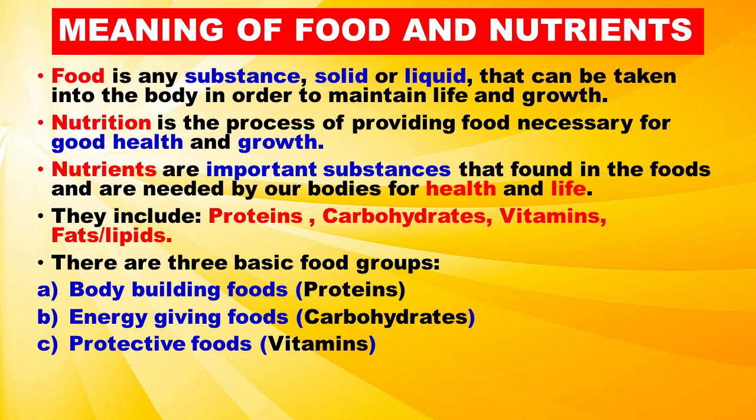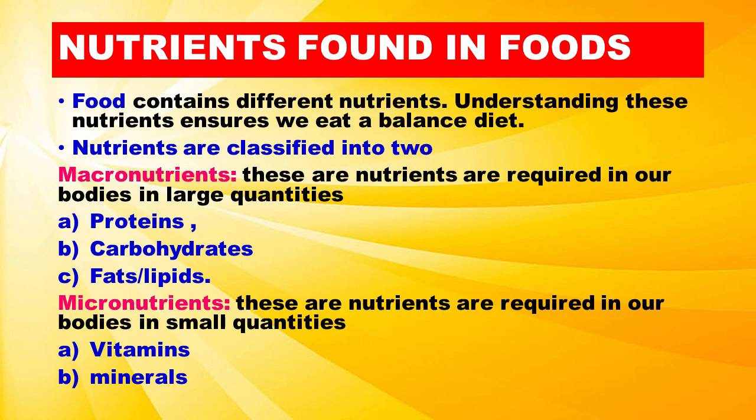Nutrients include proteins, carbohydrates, vitamins, and fats or lipids. There are three basic food groups: bodybuilding foods (proteins), energy-giving foods (carbohydrates), and protective foods (vitamins).